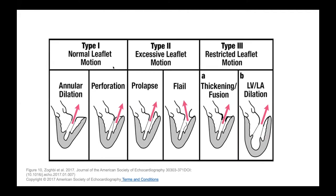This is the Carpentier classification, which classifies MR according to leaflet motion. Type one is normal leaflet motion. Type two is excessive, where you can get prolapse and flail. Type three is restricted leaflet motion, which can occur with ischemia, LV dilatation, and rheumatic valves. Types two and three are mainly primary MR, and type one is secondary MR where the leaflets themselves are not abnormal and their motion is generally normal. The problem is either the LV or the LA that's causing an issue.